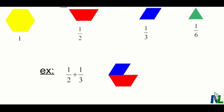But if we divide each fraction block up into six, you can then count up to see that you have one, two, three, four, five, six. So your answer is five sixths.